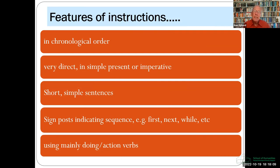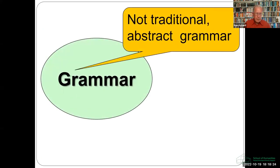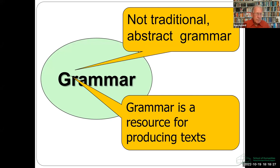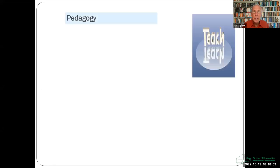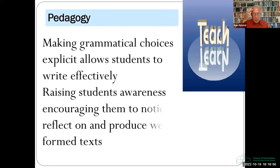Genres encourage us to look for patterns, to see how meanings are created through conventional structures. What does this look like in the classroom? For one thing, it means attending to grammar — but this is not the traditional grammar of the writing-as-object approach. Here, grammar is a resource for producing text, and a knowledge of grammar shifts writing from what is implicit and hidden to something conscious and explicit, so that students can use grammar to write effectively. In class, this often involves getting students to notice, reflect on, and then use writing conventions to help them produce well-formed and appropriate texts.